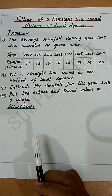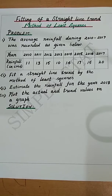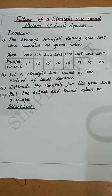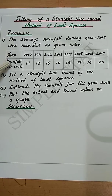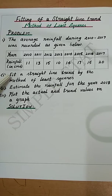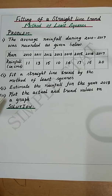Fitting of a straight line trend by the method of least squares: the average rainfall during 2010 to 2017 was recorded as given. Fit a straight line trend by the method of least squares, estimate the rainfall for the year 2018, and plot the actual and trend values on the graph.